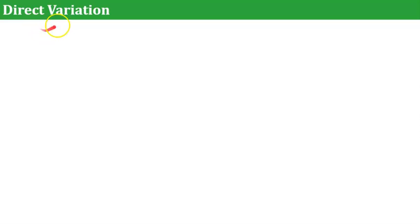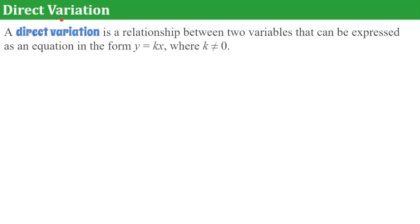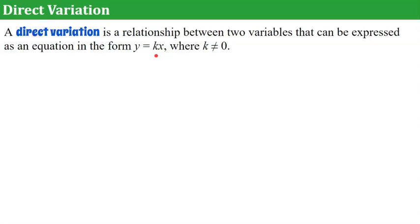Now we're going to introduce one more vocabulary word: direct variation. Direct variation is the relationship between two variables that can be expressed as an equation in the form Y equals K times X, where K cannot be zero. If K were zero, it would just be Y equals zero, which is not a proportional relationship. You need a Y, an X, and X must have a coefficient representing the constant of proportionality.